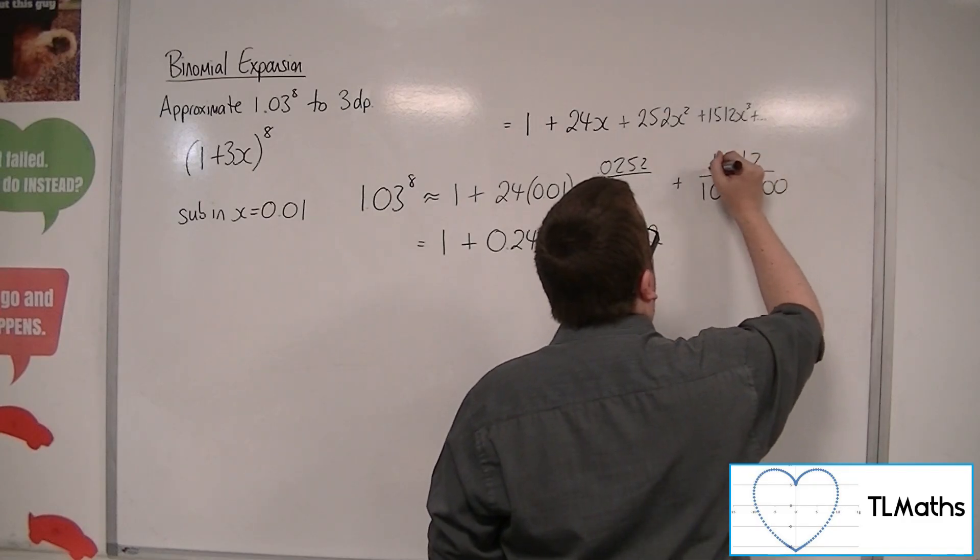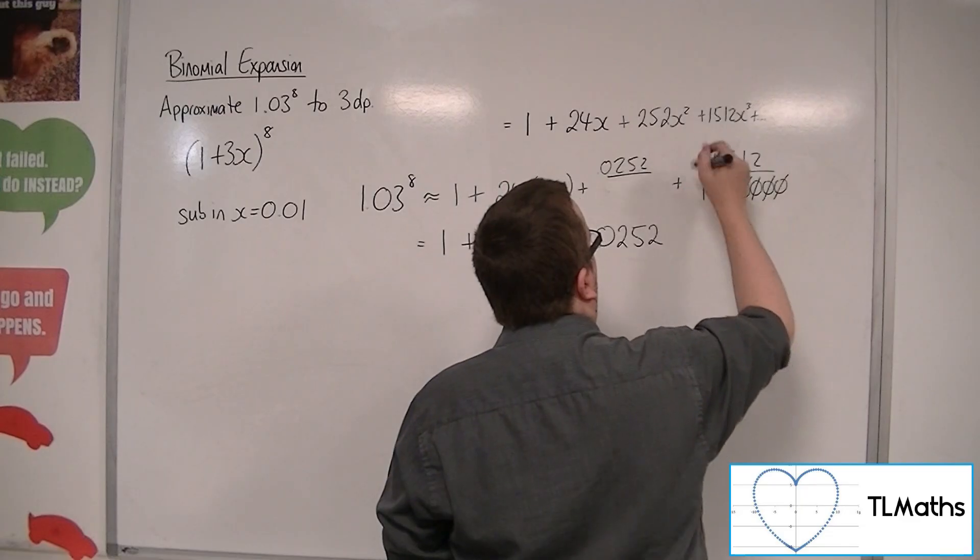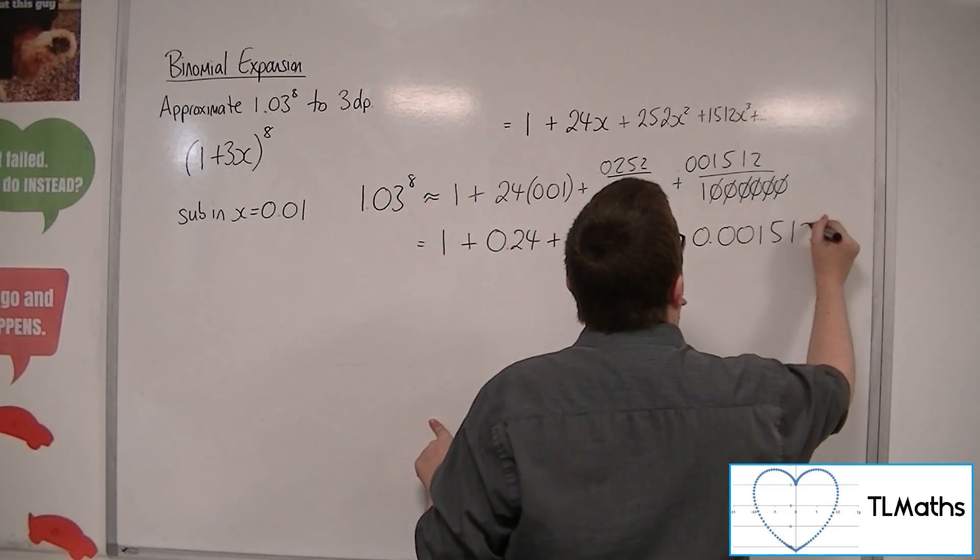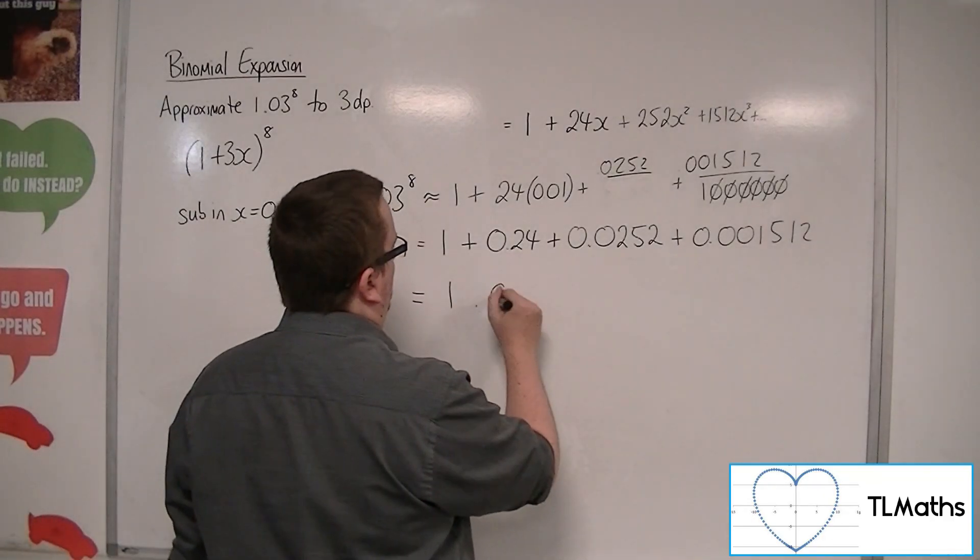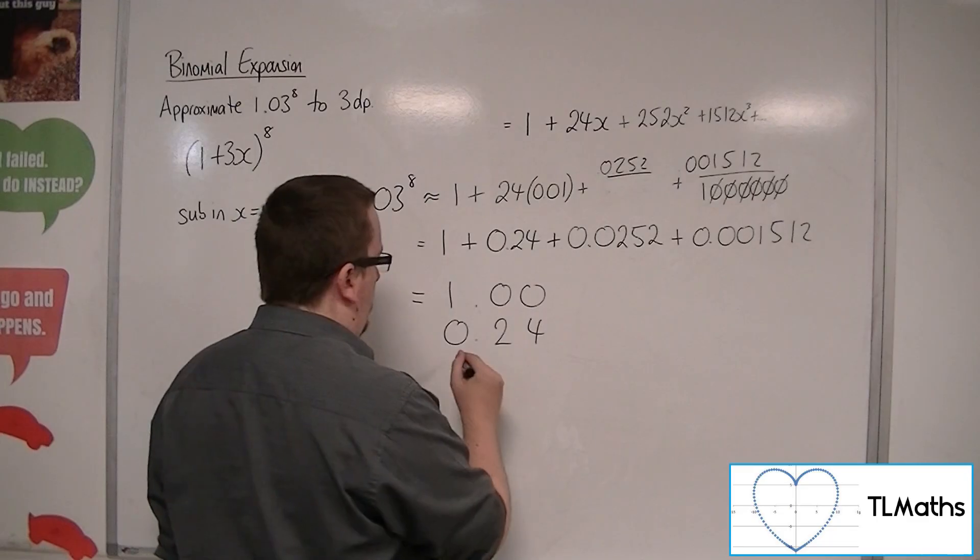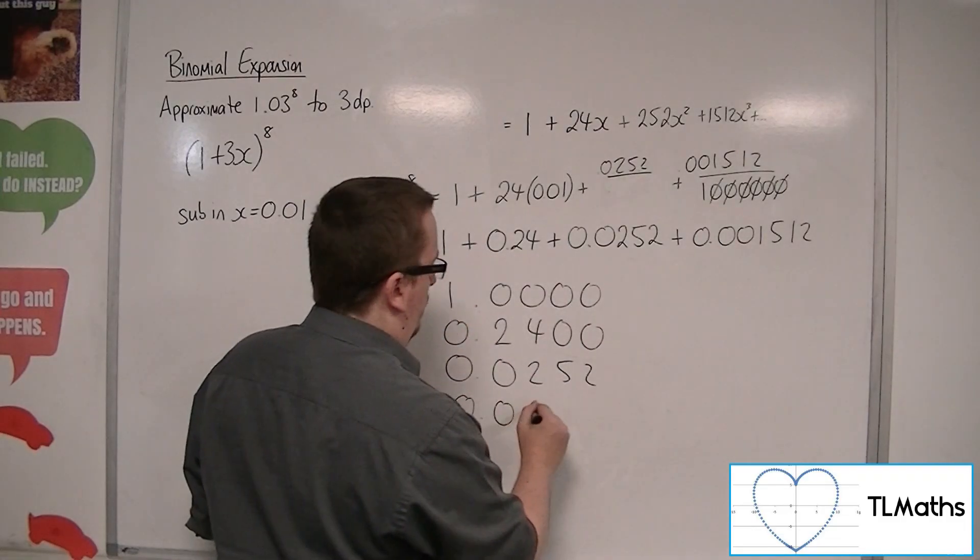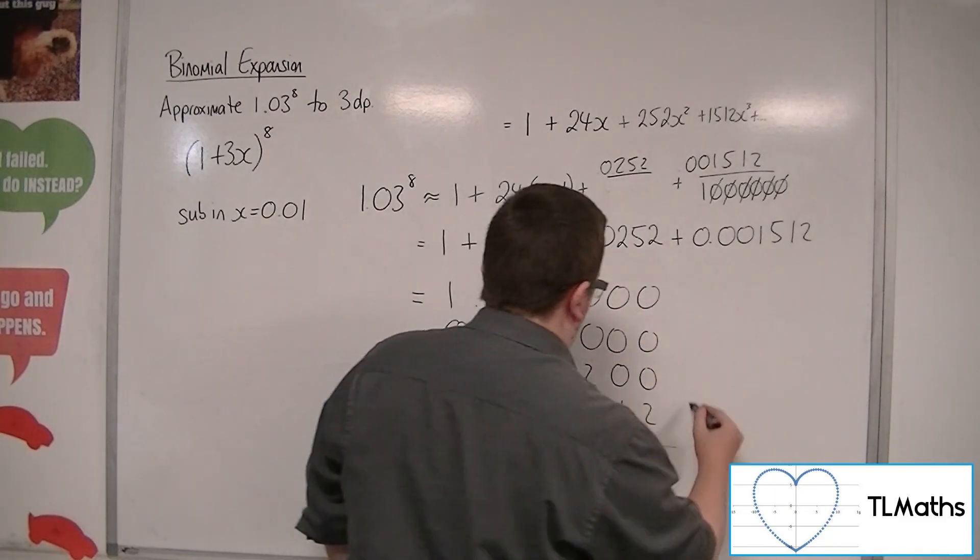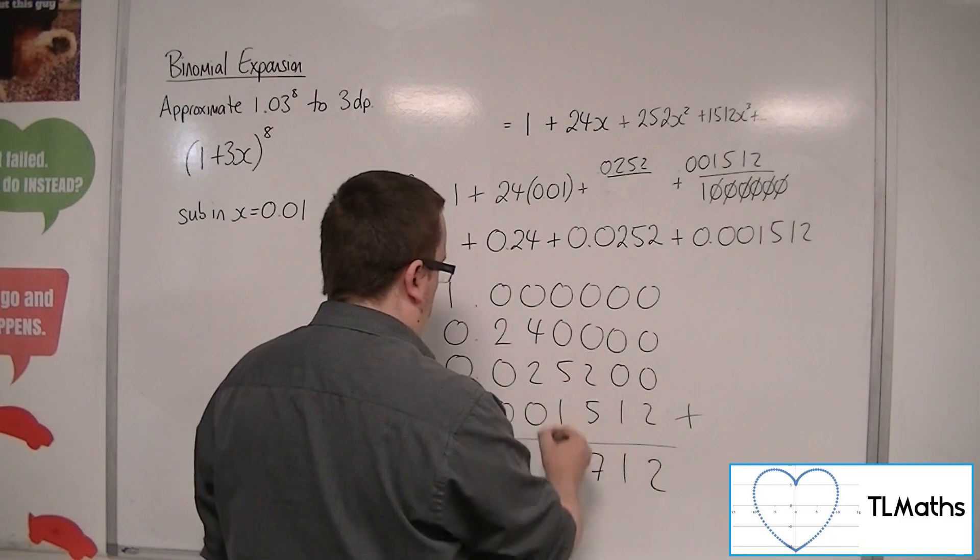So 1, 2, 3, 4 decimal places there. 1, 2, 3, 4. So, 1, 2, 4, 1, 2, 1, 2, 1, 2. Okay. So, what have we got here? We've got 1. We've got 0.24. We've got 0.0252. We've got 0.001512. Add them all together. 2, 1, 7, 6, 6, 2, 1.